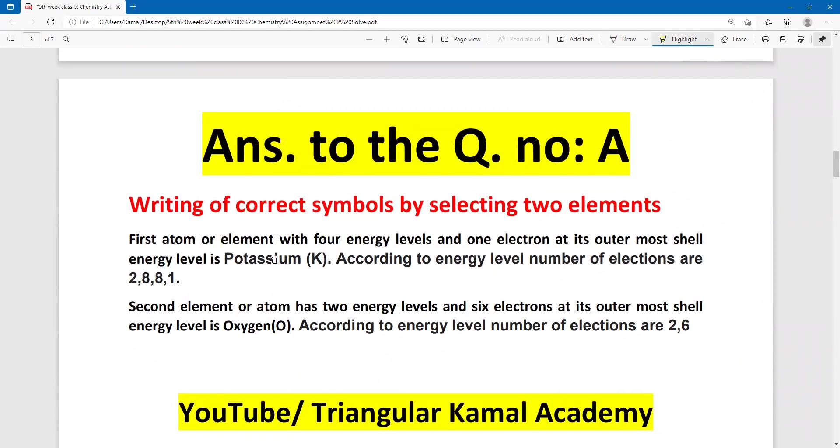So, dear students, energy level one, two, three, four, four energy level, outermost-orbit one-electron, the atom name is potassium. And second, energy level two, and number of electron total eight, outermost orbit six electron. This is called oxygen. So, now first question answer is done.